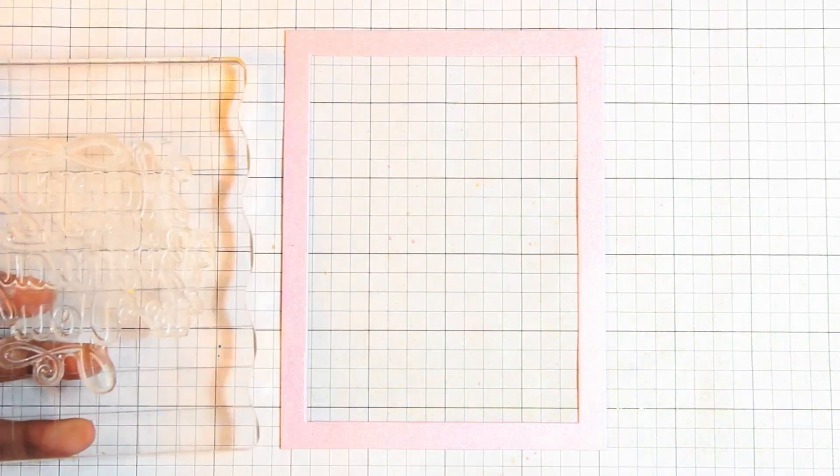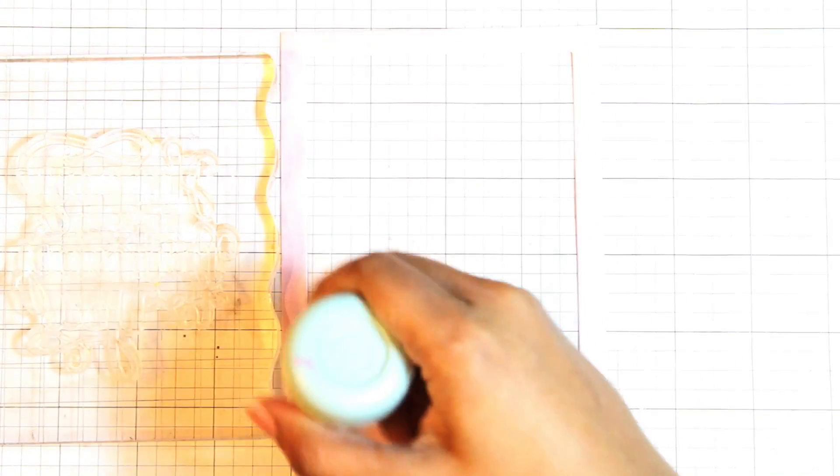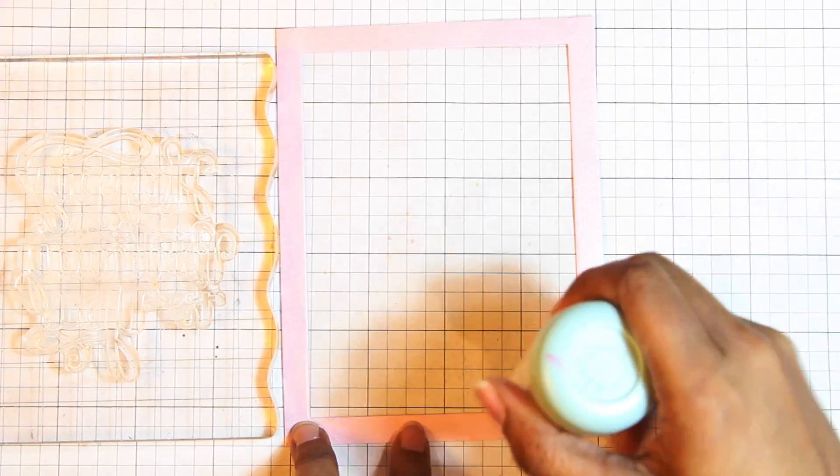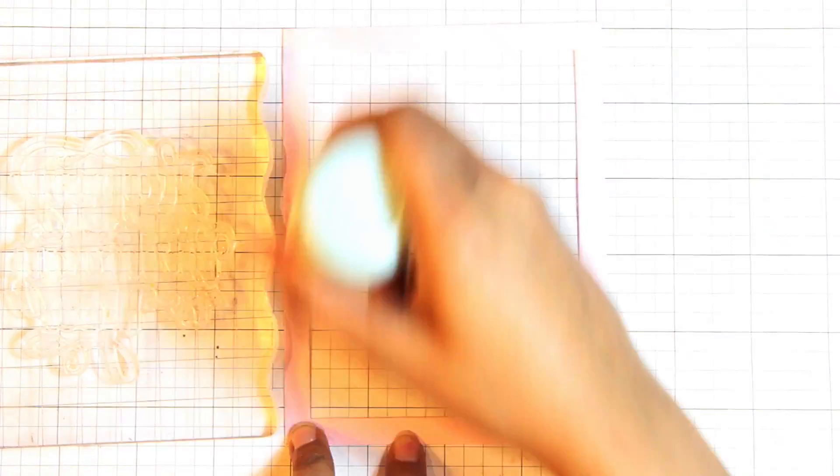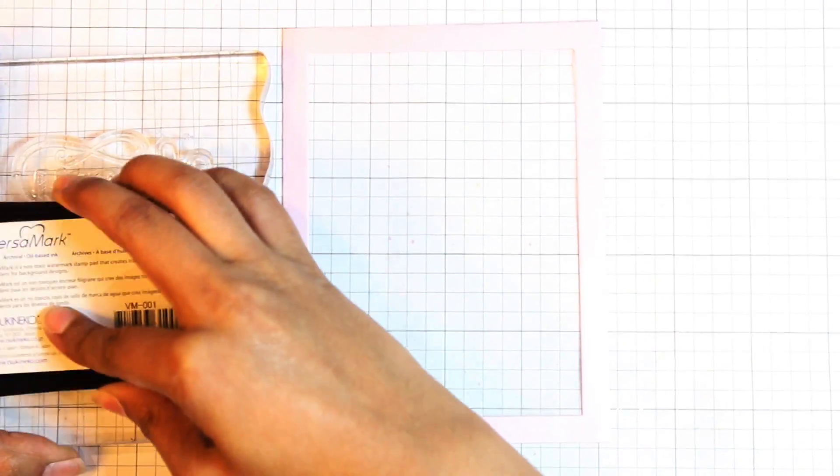I'm going to be using this Mama Elephant set called Make-A-Wish, and I'm using this large Happy Birthday to You sentiment. I'm going to be stamping it onto the acetate using Versamark ink, and this is so that I can heat emboss it afterwards with white embossing powder. Before I do that, I just want to make sure that no stray granules of embossing powder get stuck on the acetate, so I'm using my EK Success powder tool to prep the surface and the edges.